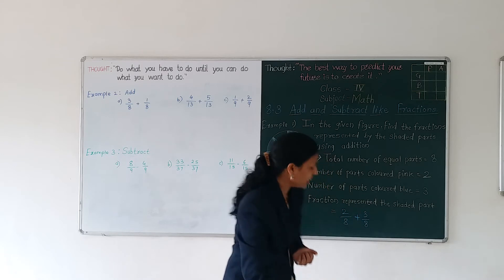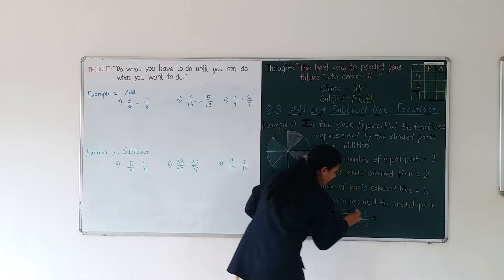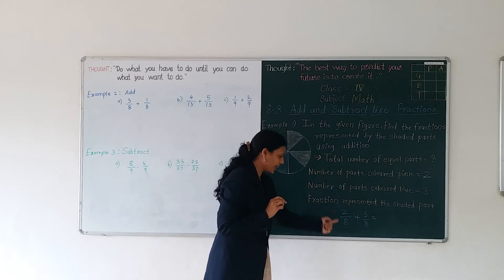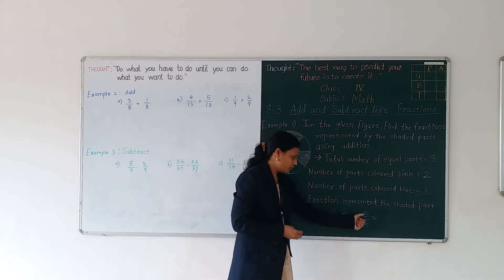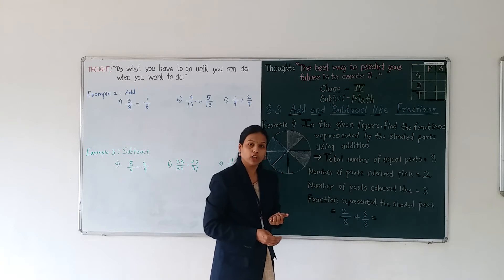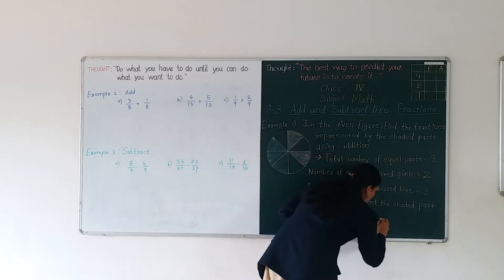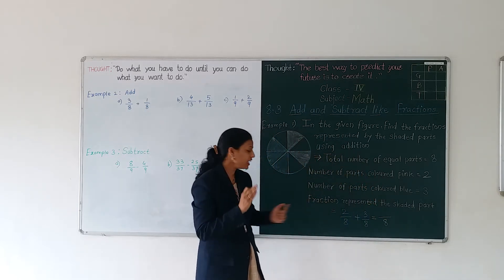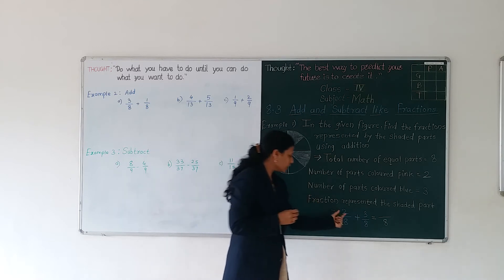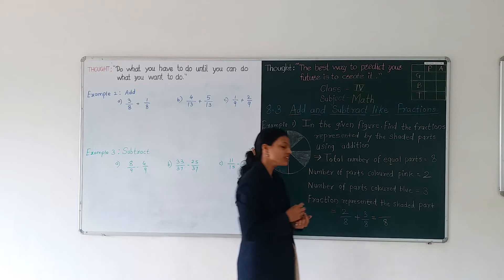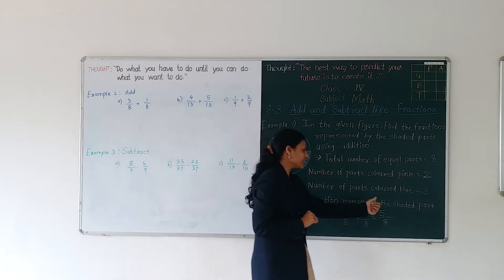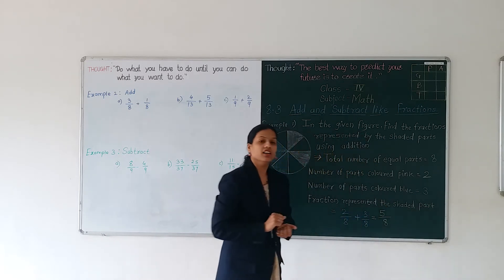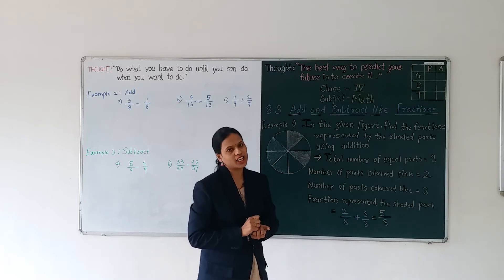2 by 8 plus 3 by 8 — how can we add? Simply, we have to add the numerators. From 2 by 8, the numerator is 2 and the denominator is 8. From blue color, the numerator is 3 and the denominator is 8. Whenever we have to add, keep the denominator as it is — denominator number 8 stays as it is. And we simply add the numerators: 2 plus 3, answer is 5. So the fraction representing the shaded part is 5 by 8.